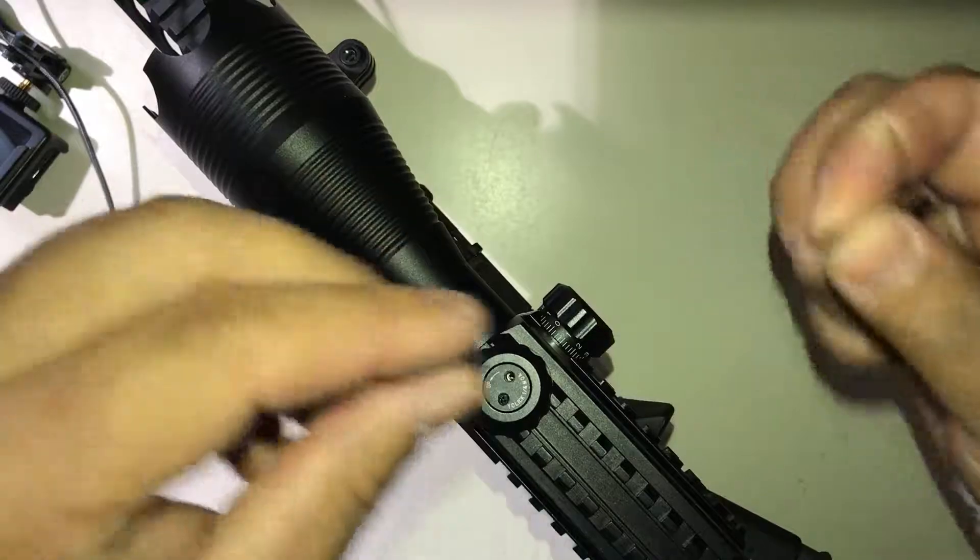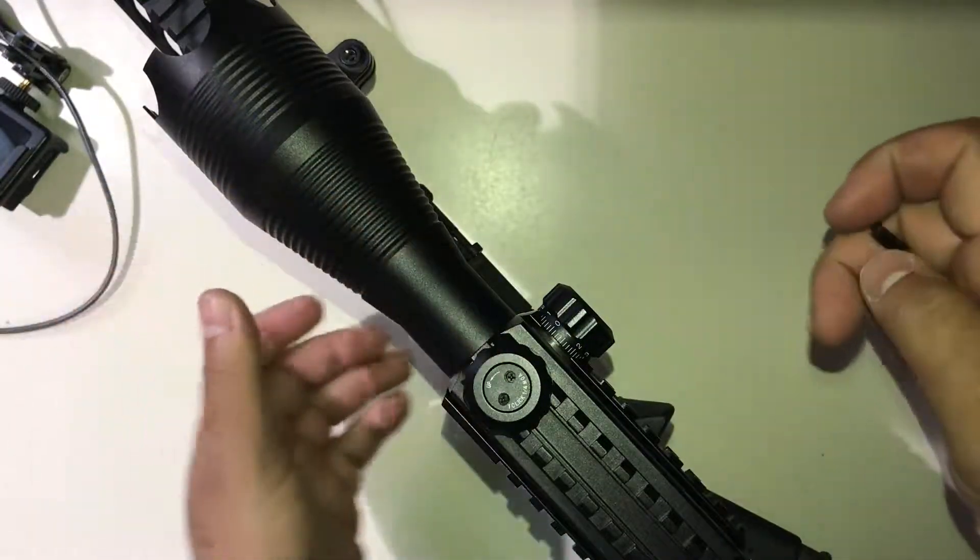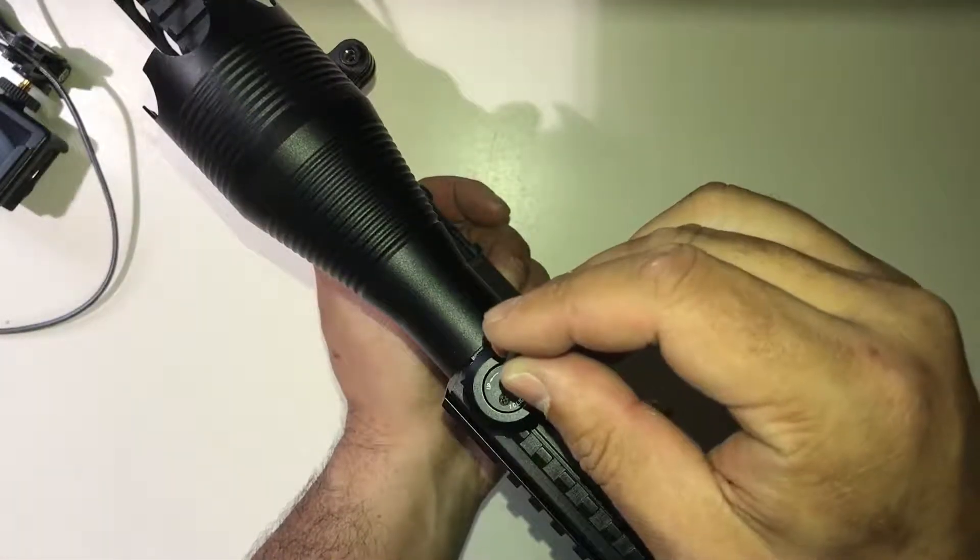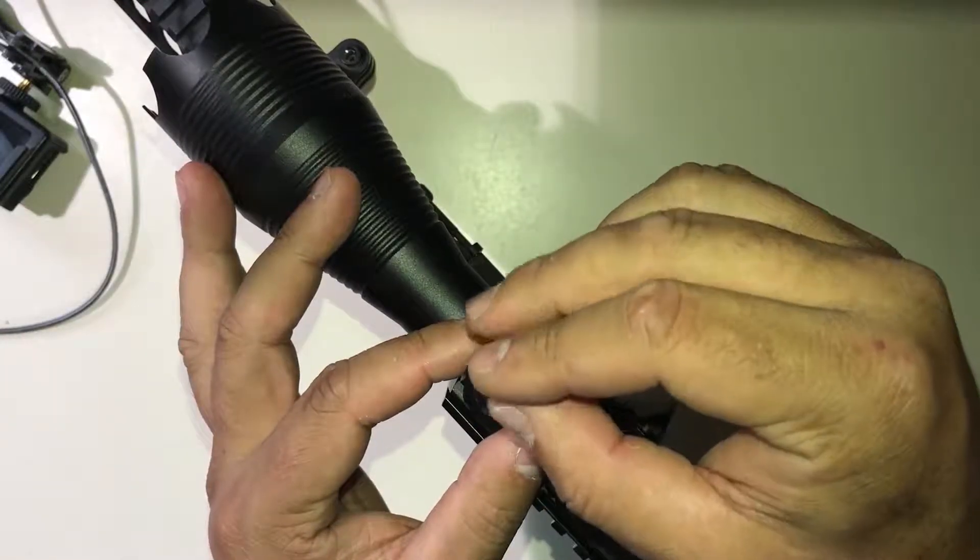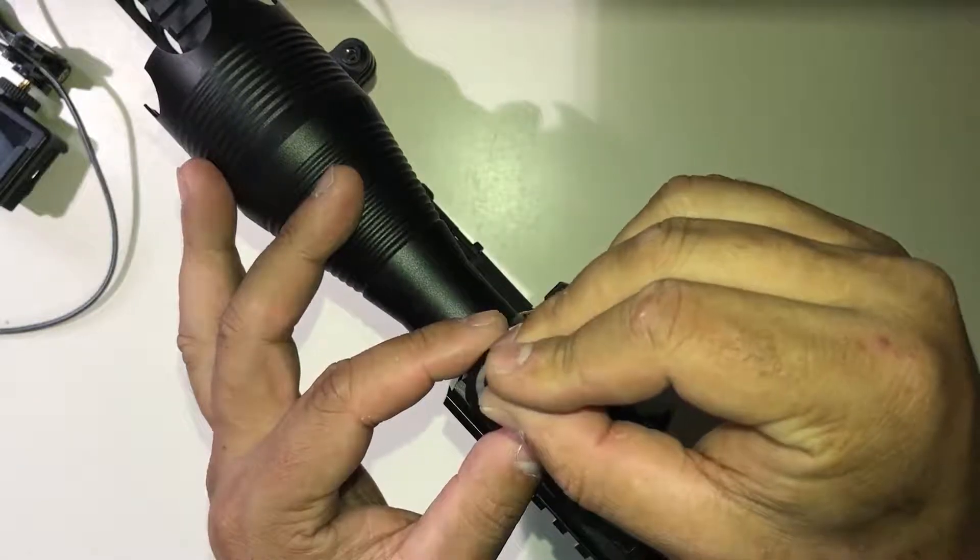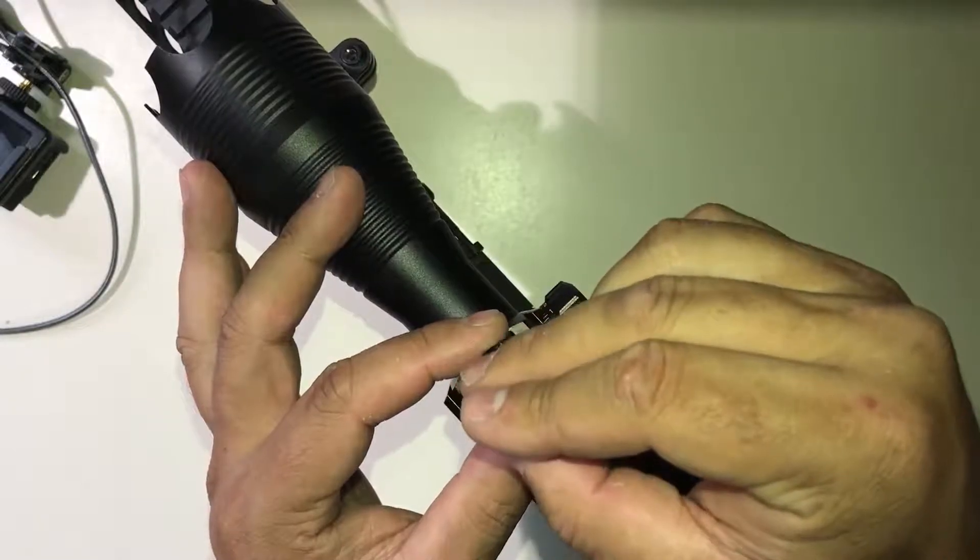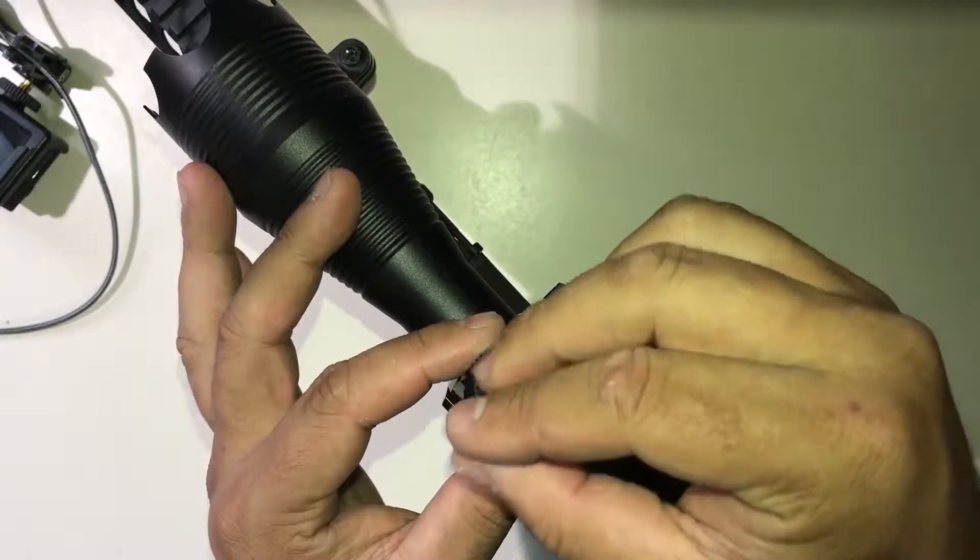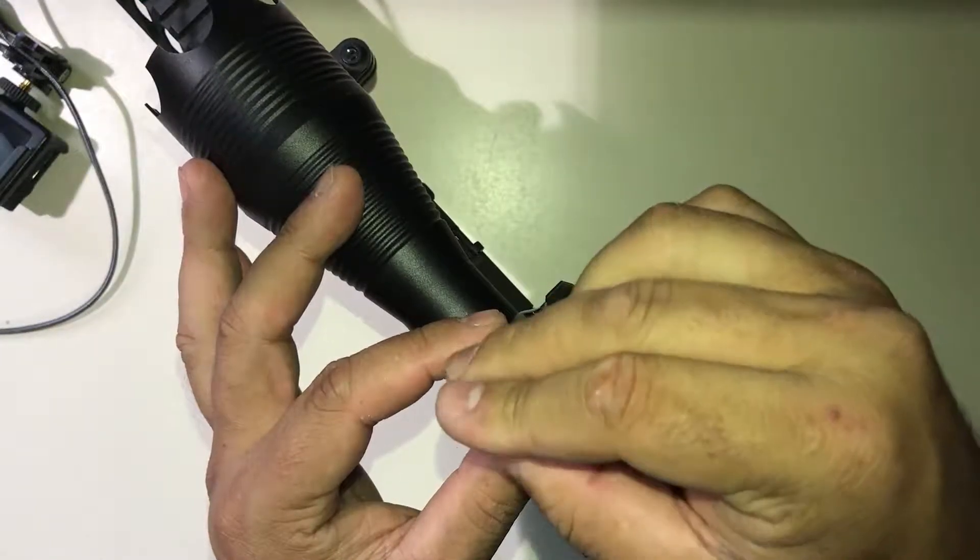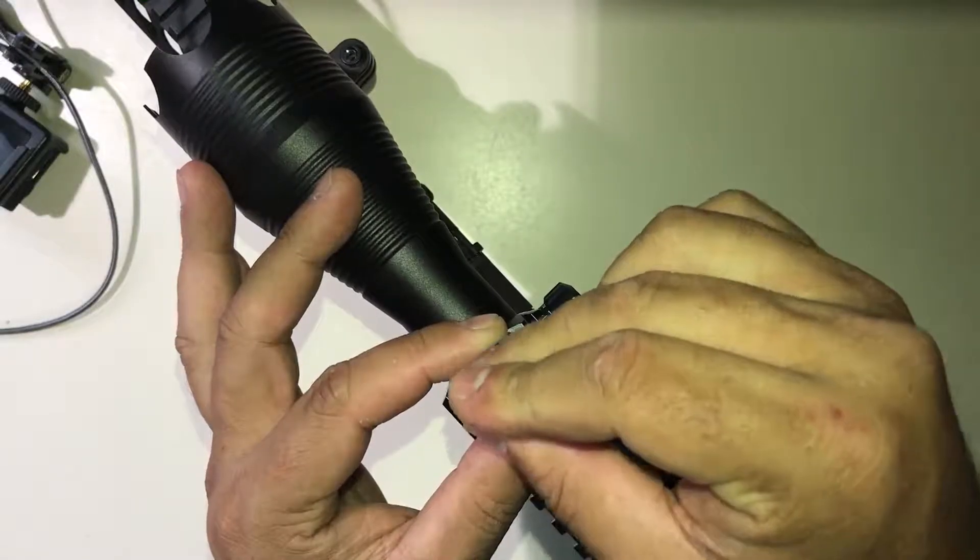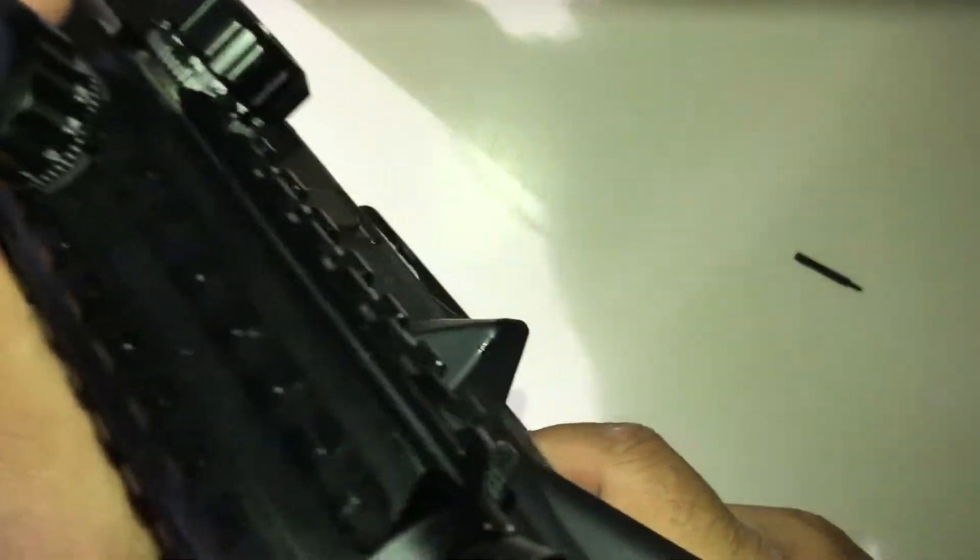Drop one, drop the other, and from here she's good. There's no need to tighten it that much. And now just verify your zero.